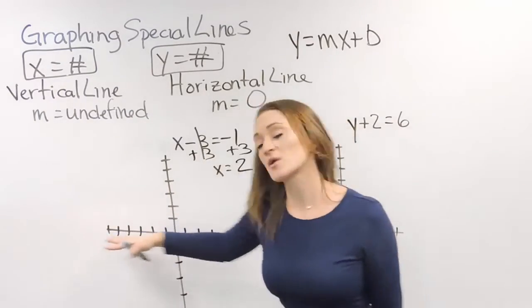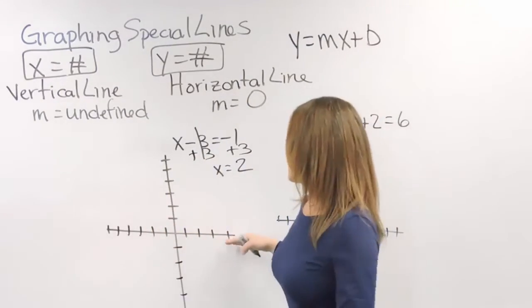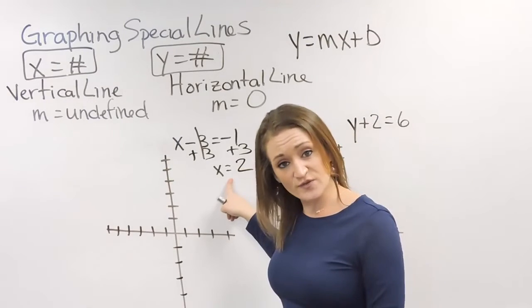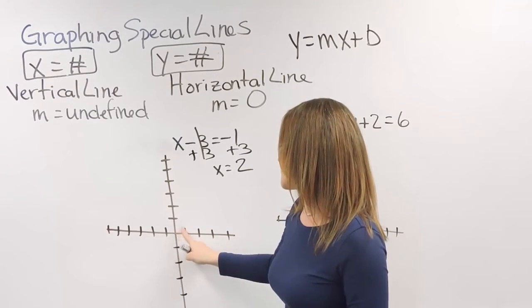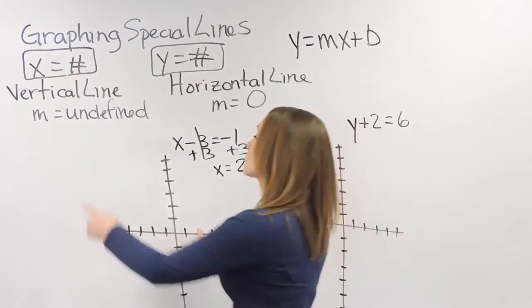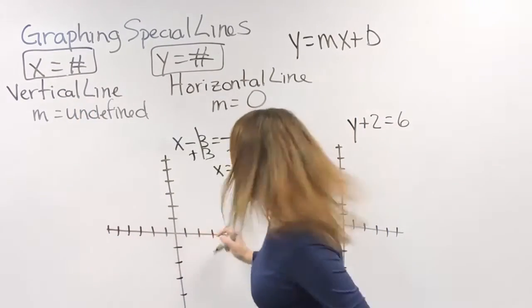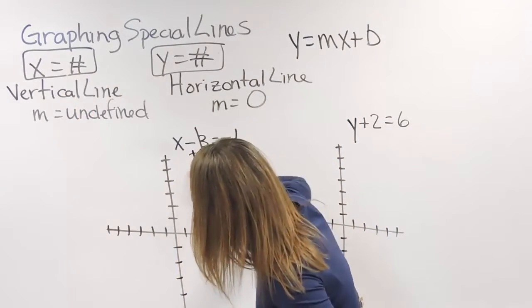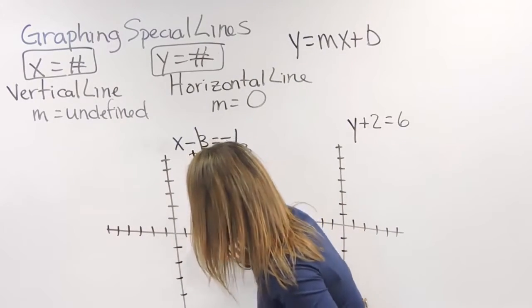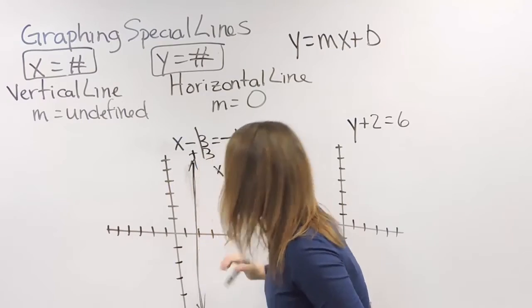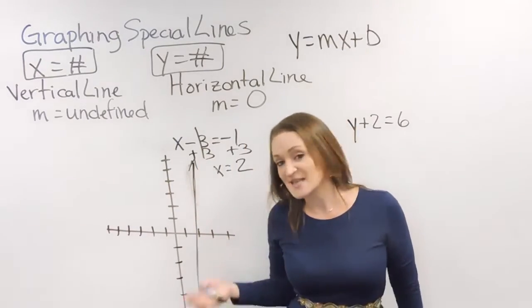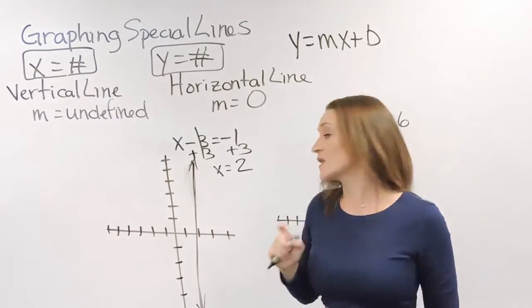Now our x-axis is the one that runs side by side here, left to right. Find a positive 2 on the x-axis. So a positive 2 on the x-axis is right here, 1, 2. Draw a vertical line at 2. So, I'm going to be going a little crooked here. So there we go. Close enough. X equals 2. That's exactly what this line would look like.